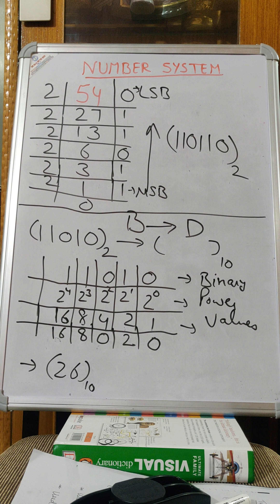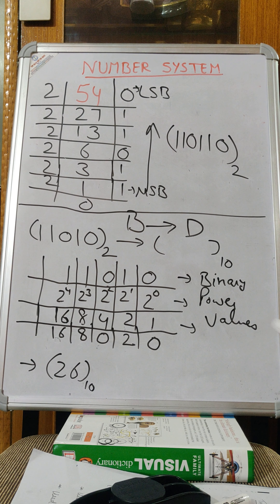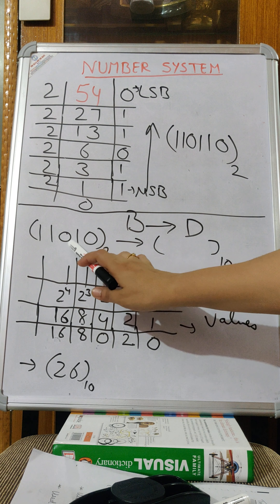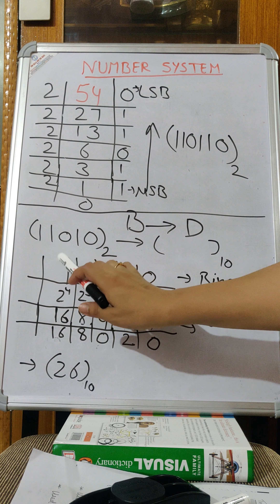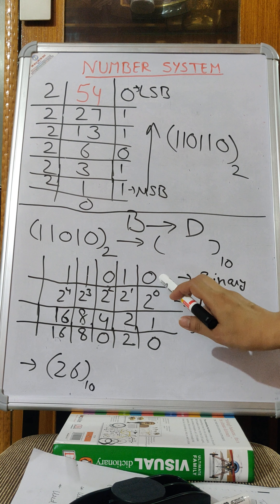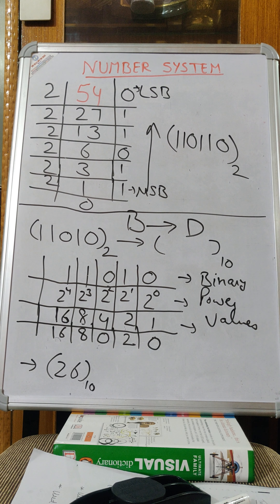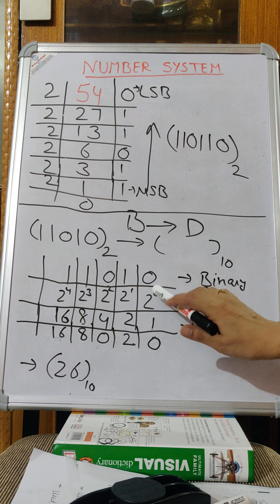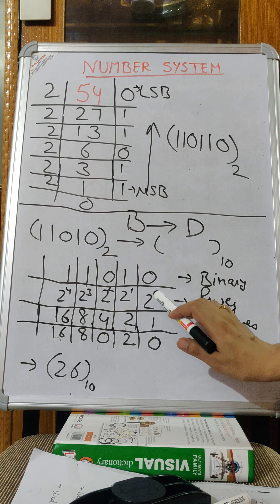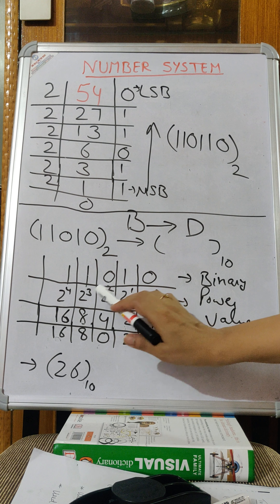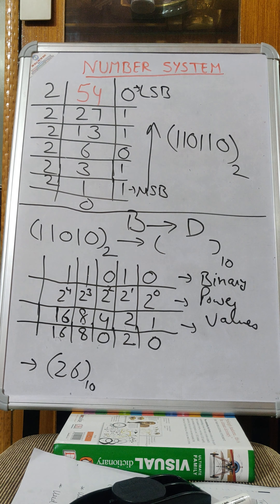The first step is to write the binary number as it is, starting from the right-hand side: 0 1 0 1 1. We have written the binary number right to left. Then in the next line we will write the powers of 2 starting from the right-hand side: 2 raised to power 0, 2 raised to power 1, 2 raised to power 2, 2 raised to power 3, 2 raised to power 4.